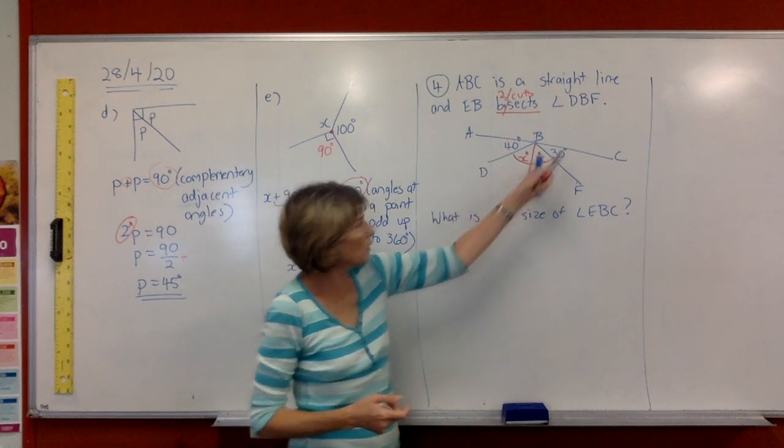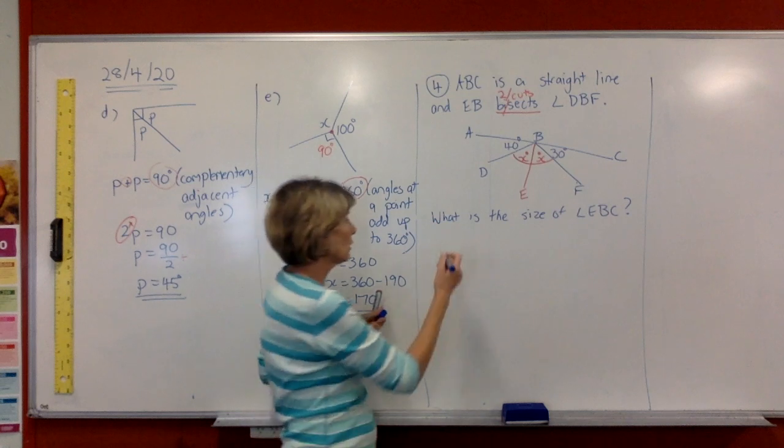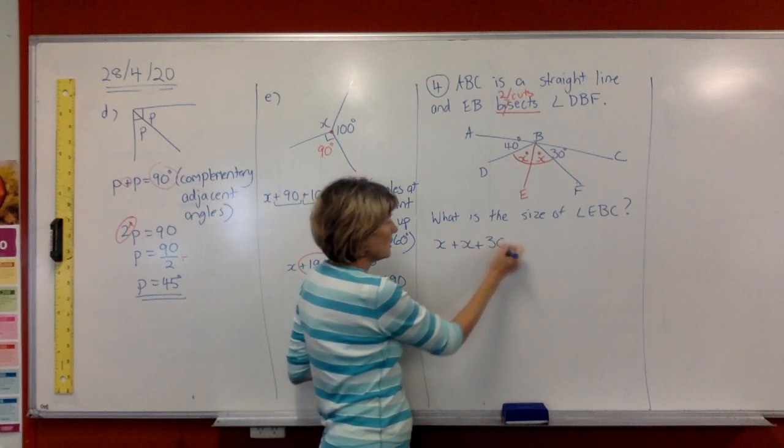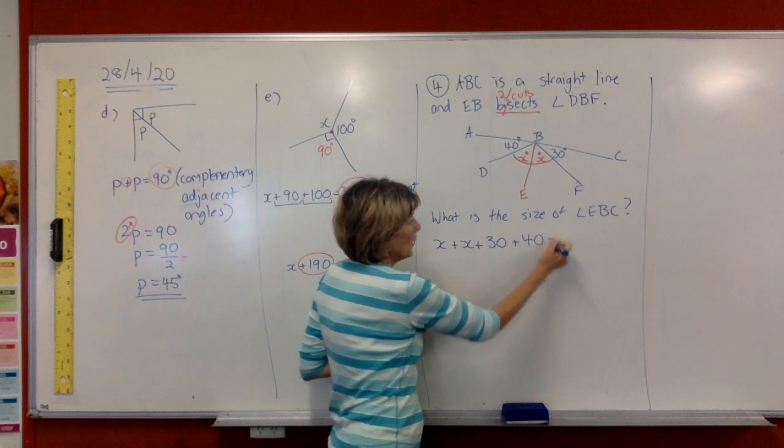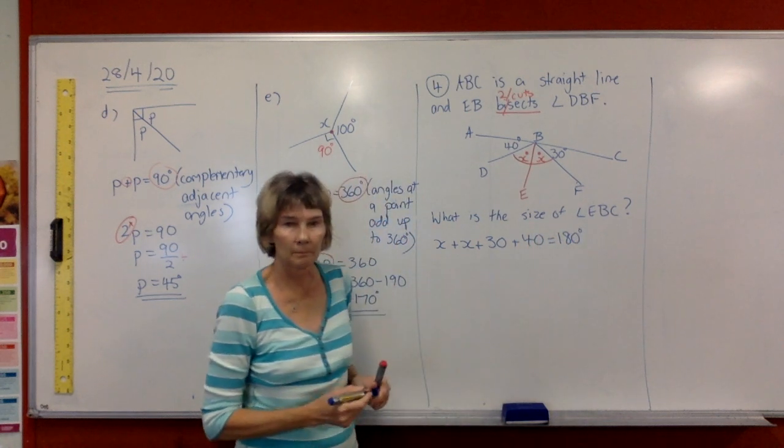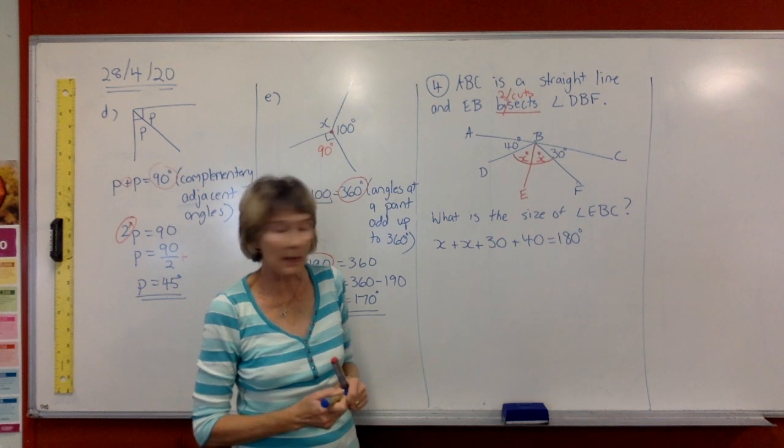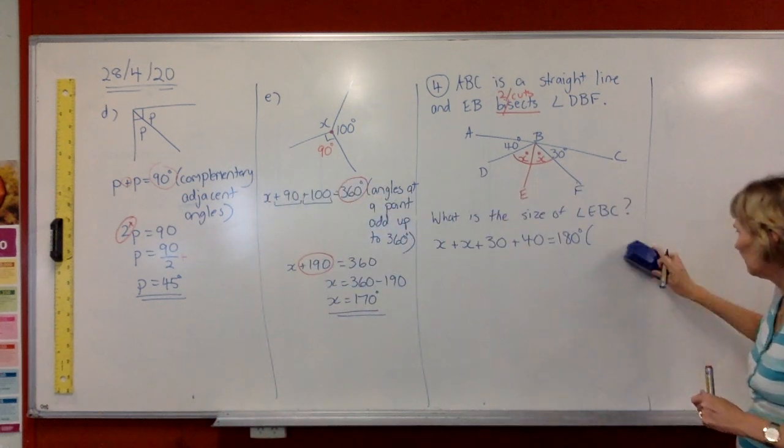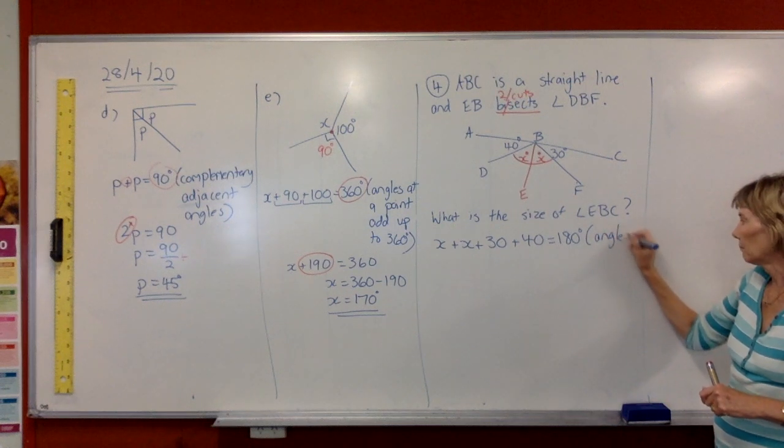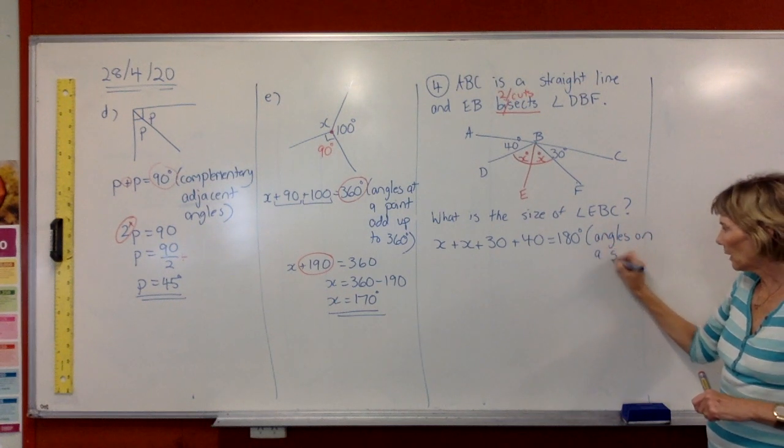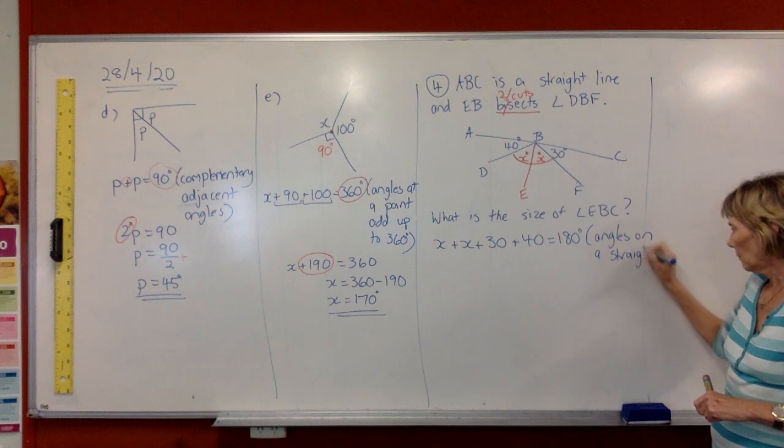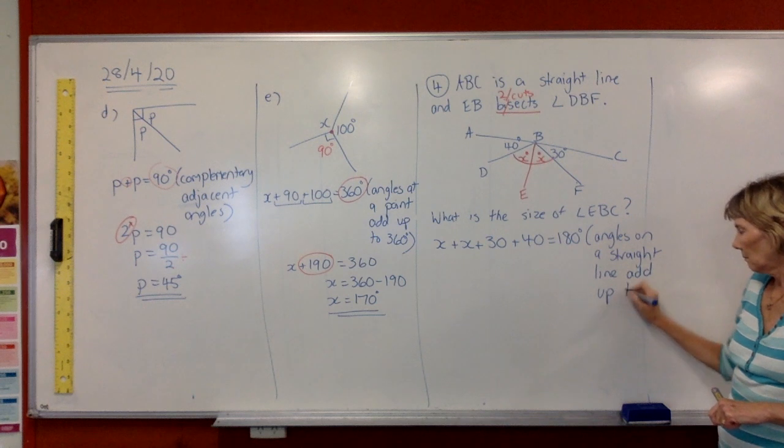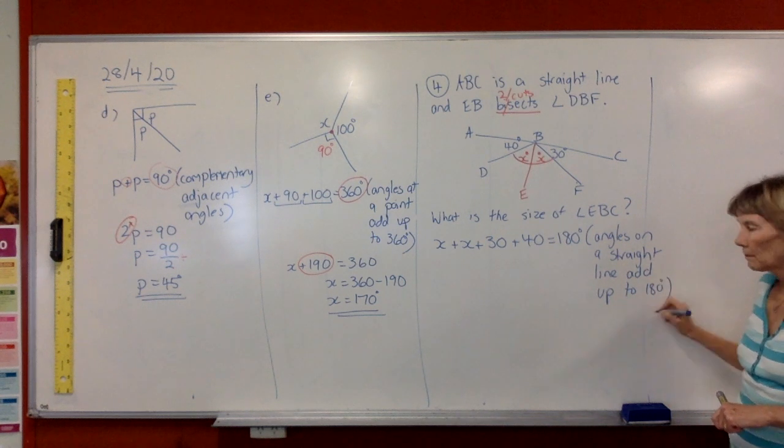All right, so all of these angles here are on a straight line or a straight angle. So if we add all of these things up, we're going to equal 180 degrees. So we have to explain where the 180 came from. So we're going to write angles on a straight line add up to 180 degrees.